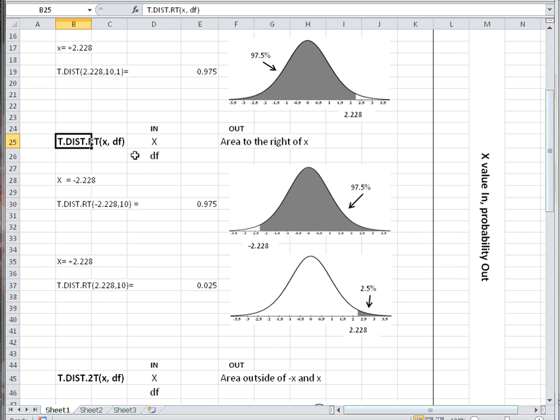This one returns the area to the right of a value of x. The input is x and the degrees of freedom. There is no specification necessary for cumulative or non-cumulative.